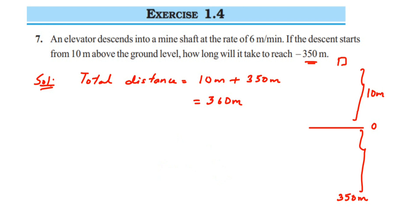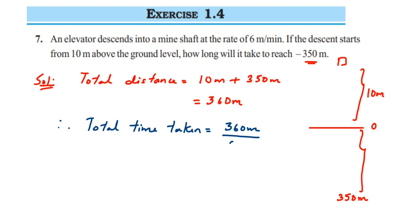Therefore, total time taken will be 360 meters divided by 6 meters per minute. The meters cancel out, leaving only minutes. 360 divided by 6 equals 60, so we get 60 minutes. Since 60 minutes equals 1 hour, it will take 1 hour for the elevator to reach minus 350 meters below the ground level.